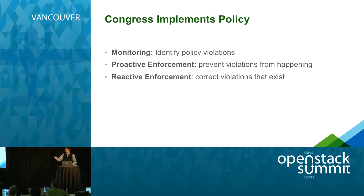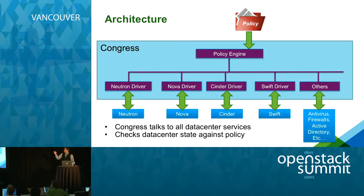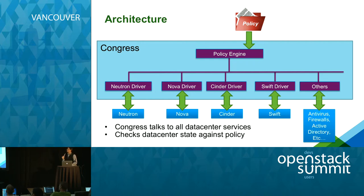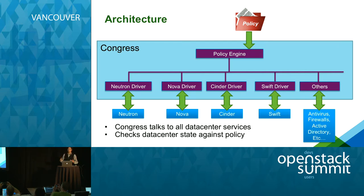Before I go into more detail with examples, I want to give an overview of the architecture of Congress — what it looks like inside. In this picture, the big blue rectangle is Congress. It consists of mostly two types of components. The top one is called the policy engine, and that's where the various admins and users can insert their policy. They tell Congress their policy, and that's where it lives and where the actual rule checking happens.